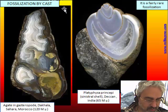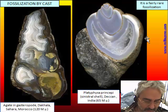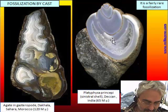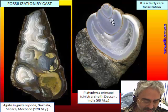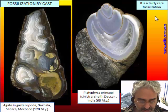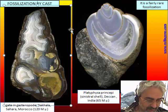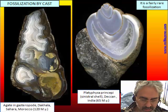This is a kind of fossilization by cast. Some shells that leave an empty space are filled by agate. This is a sinistral shell found in the Deccan — it is very popular in recent years and is a quite rare kind of fossil.